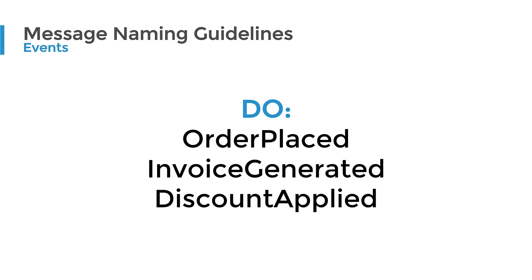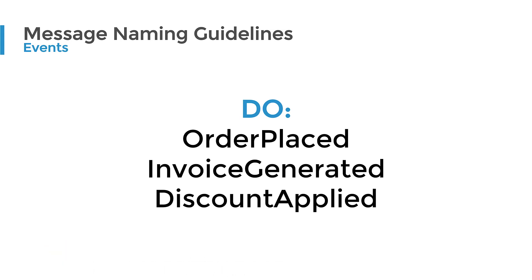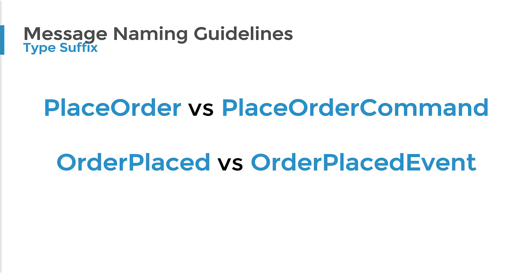For events, similar to commands, we want to avoid words like created, updated, or deleted in our naming. Good examples are generally in the form of a noun followed by a past-tense verb: order placed, invoice generated, discount applied. Avoid things like 'ordered' — ordered what exactly? Avoid 'invoice created' — we're trying to avoid CRUD terminology. 'Discounted' alone — discounted what? Remember that events are consumed by other parts of the system, so clarity matters.